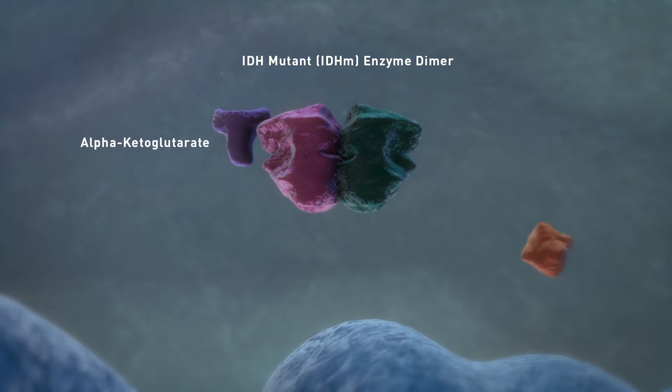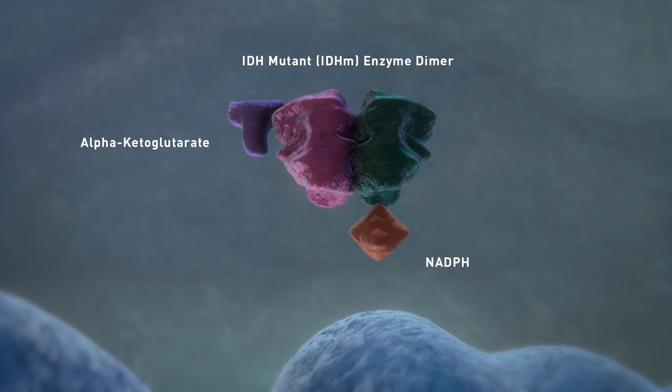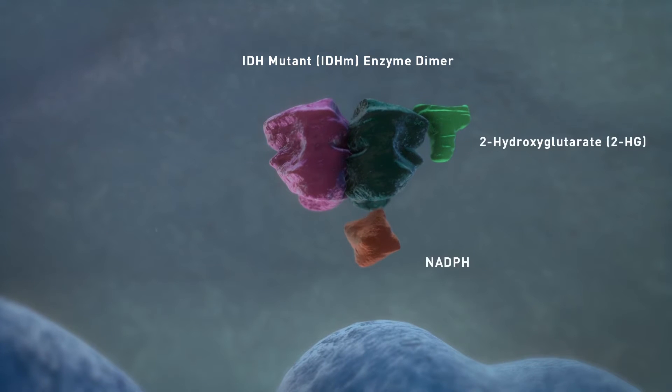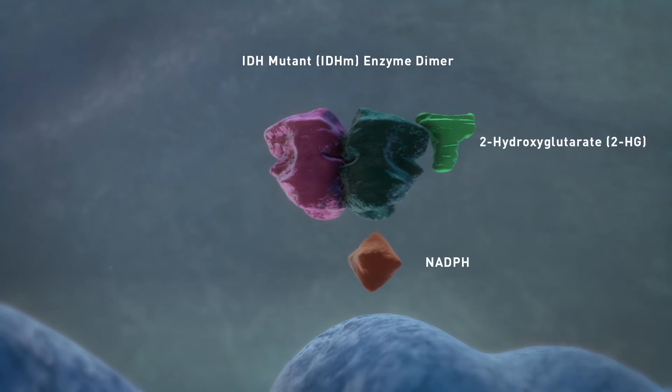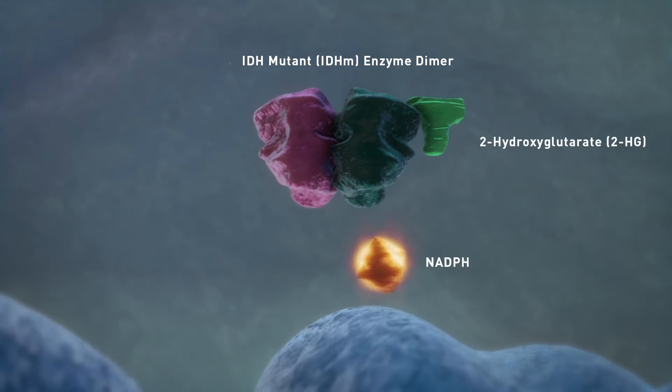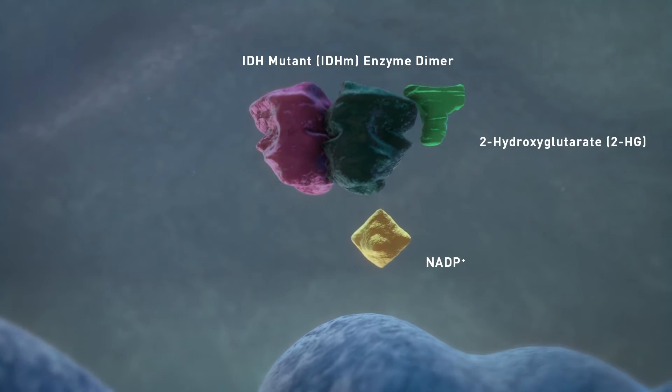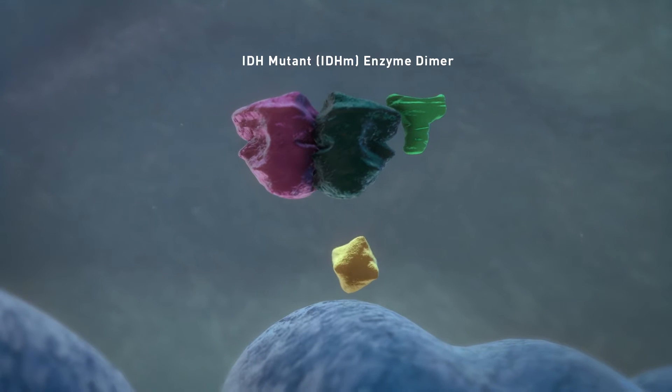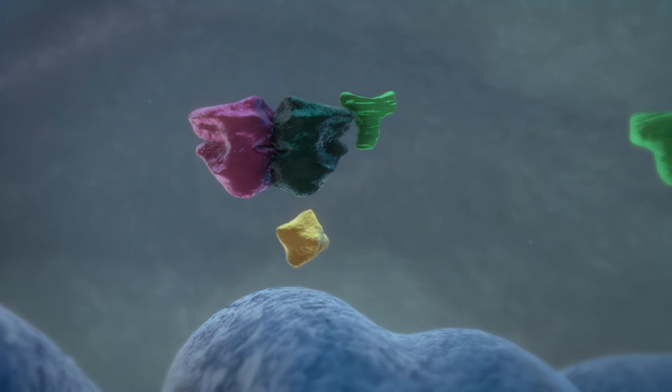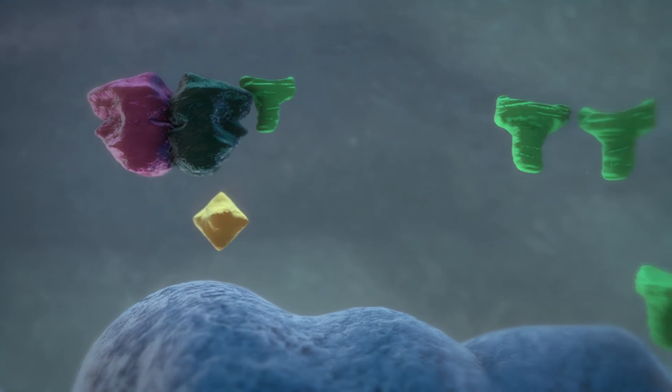However, the mutated copy takes alpha-ketoglutarate and converts it to the oncometabolite 2-hydroxyglutarate, or 2-HG. This reaction consumes NADPH, which may increase reactive oxygen species and thus promotes oncogenesis. This leads to an accumulation of 2-HG levels within the cell.